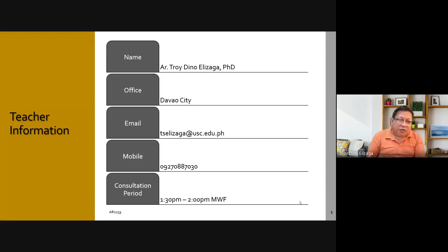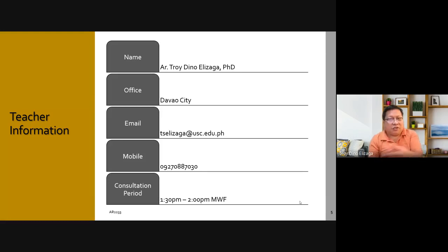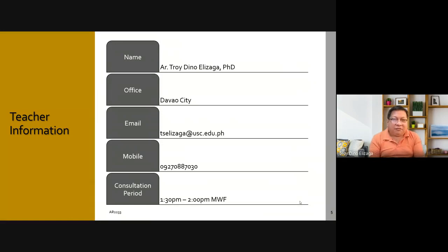My email address and mobile number — I prefer that you contact me through email. And if you have to contact me by mobile, I prefer text over call. When you contact me, please identify what course you belong to, or at least what course your concern is about, because it's really difficult for me to memorize all the students under all my courses.